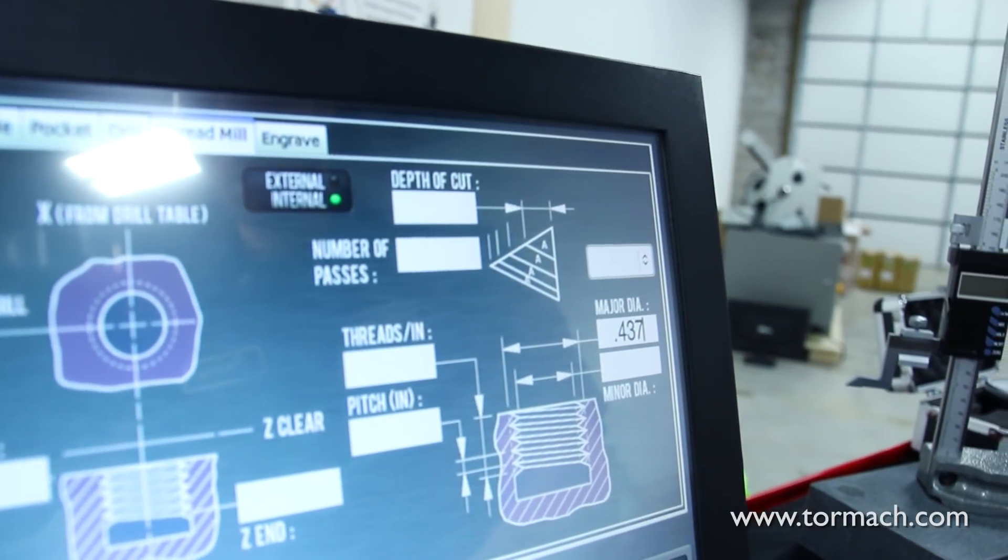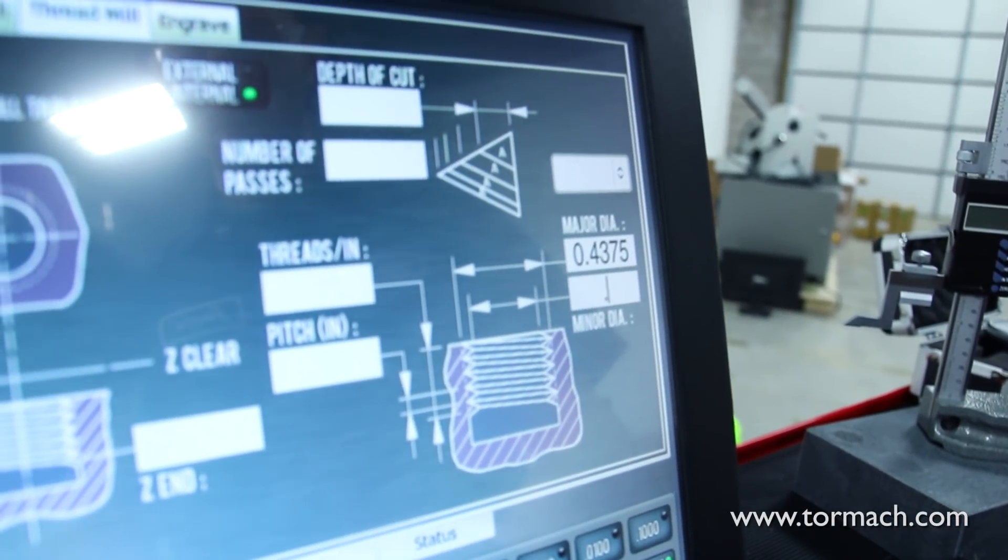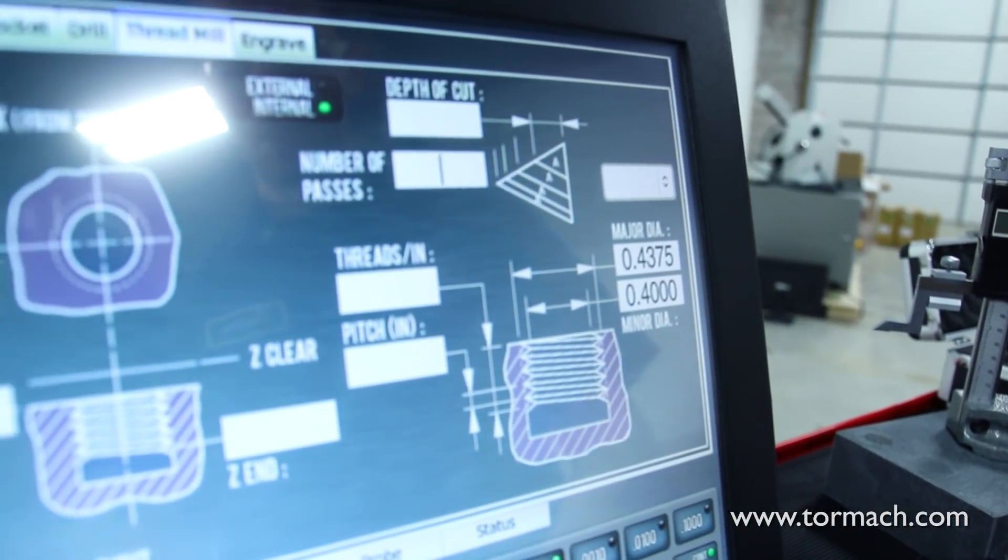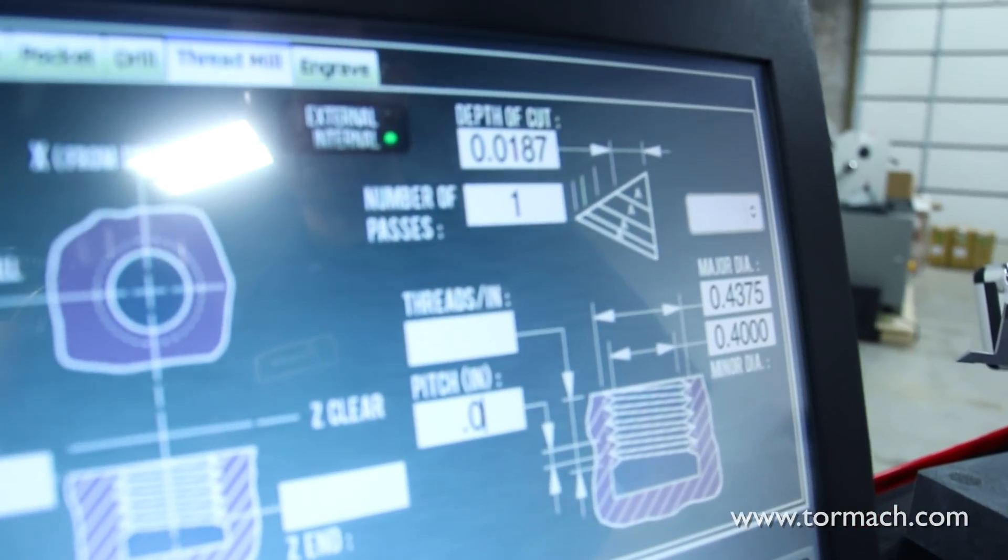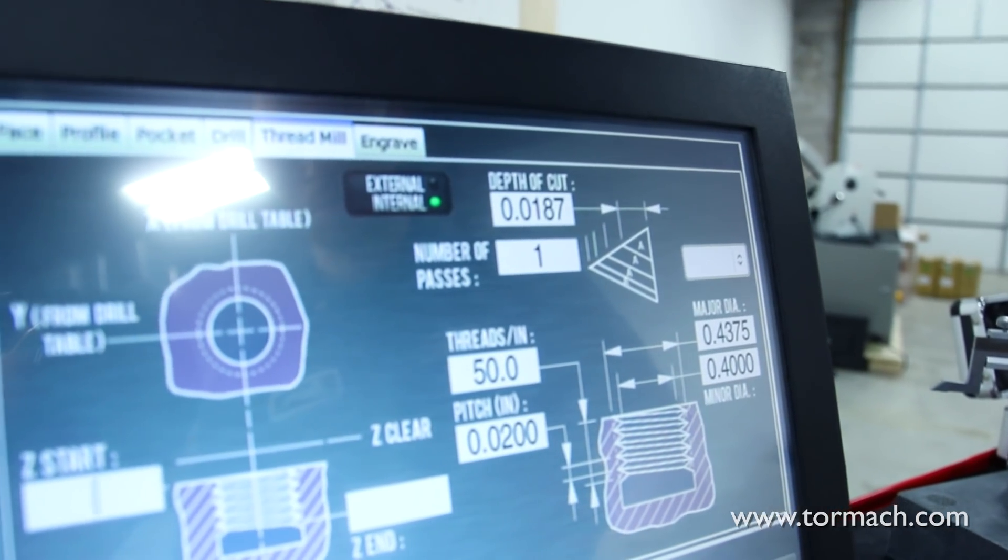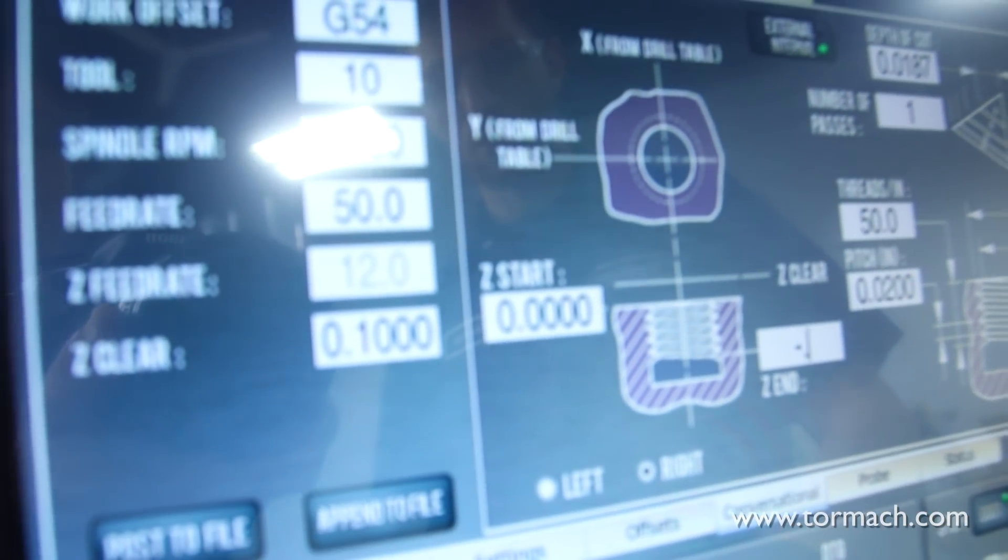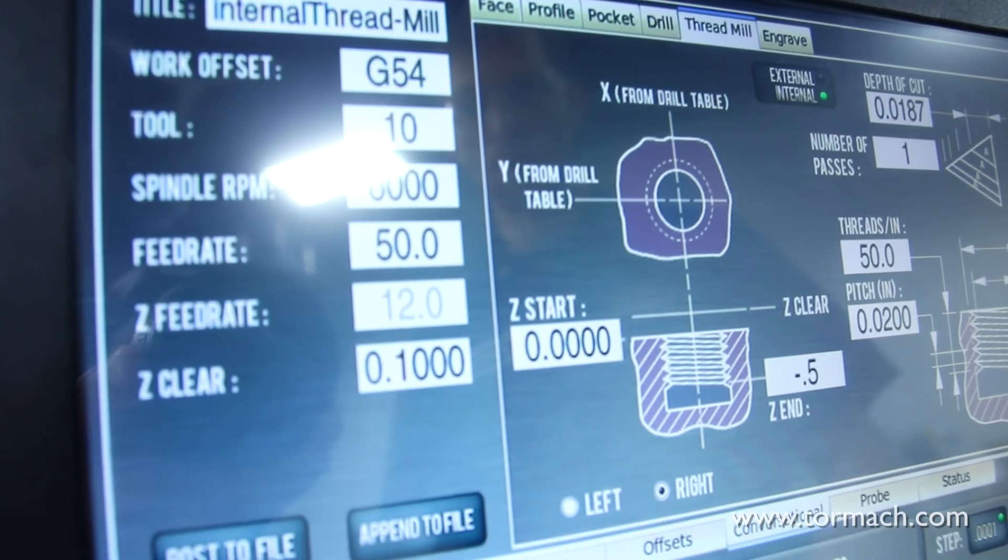I'll go ahead and just redo this quick. Our major diameter was 0.4375, our minor we did 0.400. Number of passes, we're going to do a single pass, and our pitch was 20 thousandths of an inch. Starting position was zero and we were going down to minus 500 thousandths.